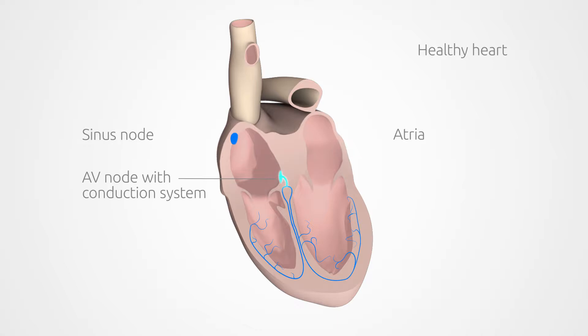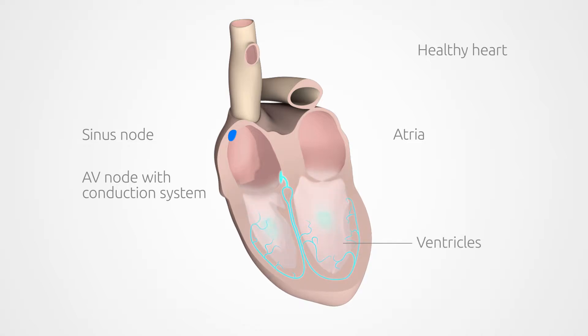The AV-Node receives the individual signals and sends them along the conduction system, eventually causing the ventricles to contract.